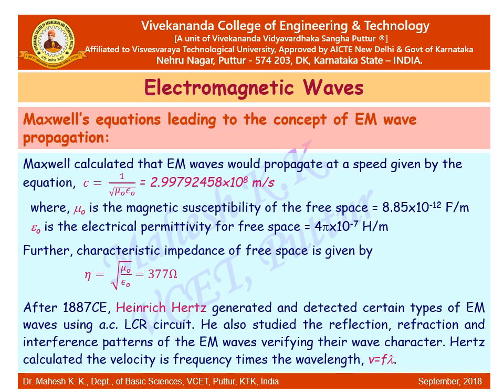The waves predicted consist of oscillating electric and magnetic fields, defined to be an electromagnetic wave. Maxwell calculated the speed of light, c, using the fundamental constants mu naught and epsilon naught — the magnetic permeability and electrical permittivity. By substituting their values, the velocity of light is obtained as approximately 3 × 10⁸ meters per second. The characteristic impedance is also calculated from these constants as 377 ohms.